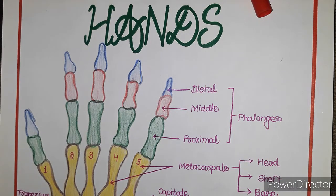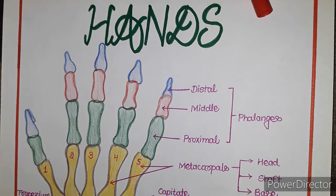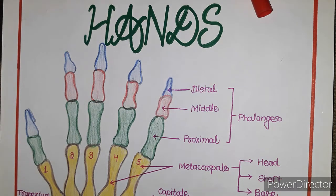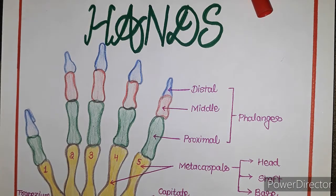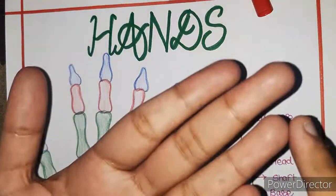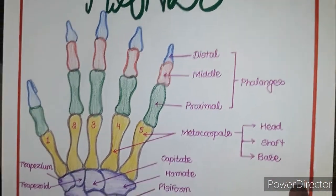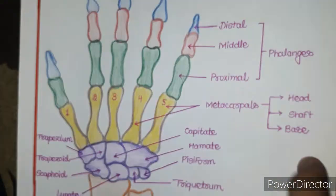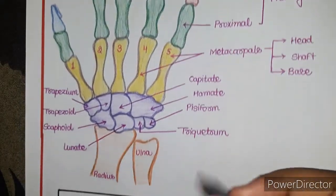Hello guys, welcome back to my channel. We have already completed radius, humerus, and capilla, so now it's time for the hand bones. First, I want to clear a doubt between the hand, arm, and forearm. Some students think that the hand is from the arm to the fingers — no, it's not. In anatomy, only this part is known as the hand, from the wrist joint to the fingers.